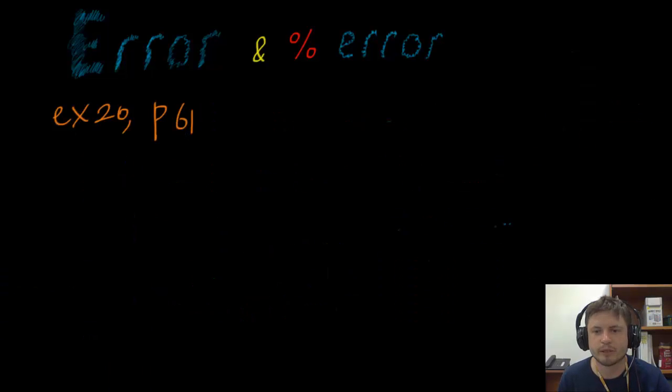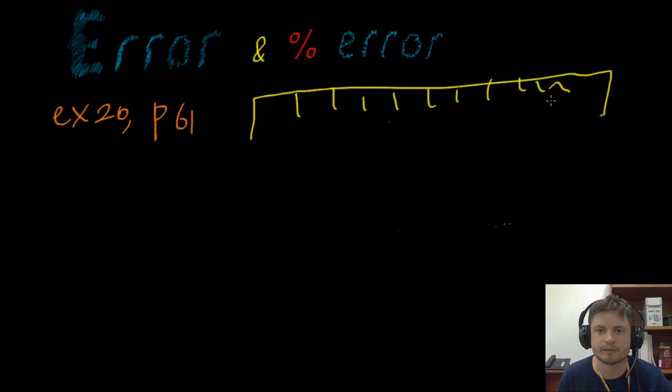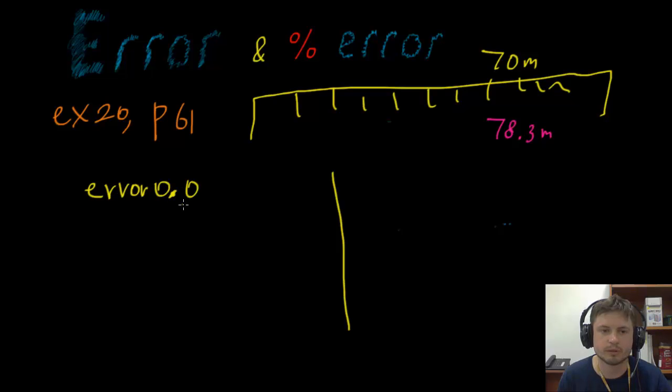All right. Let's try another example. This is example 20 from page 61. And this is also a very similar problem here though. You're actually trying to guess a length of a fence. And you think that this fence is approximately 70 meters long. When in reality though, in reality it's 78.3 meters long. And the question is this. There's actually two questions. Let's divide them into two parts. One is find the error of your estimation to one decimal point. So in other words, you're going to have something and then one decimal point. And the second question is find the percentage error also to one decimal point.